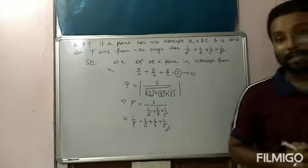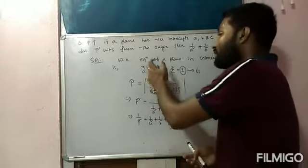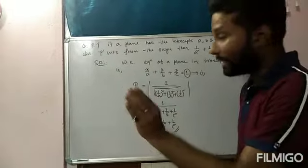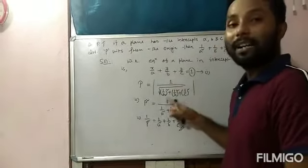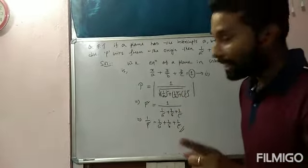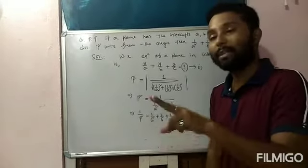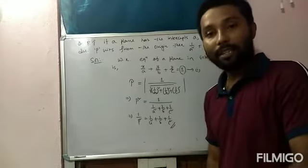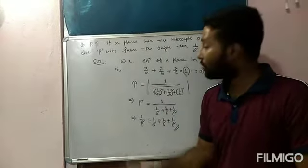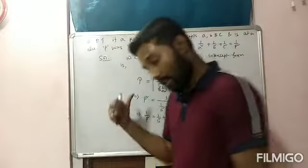This formula is analogous to the 2D straight line formula. In 2D: distance from origin = |constant| / √(coeff of x)² + (coeff of y)². In 3D: |constant| / √(coeff of x)² + (coeff of y)² + (coeff of z)². If you don't know the intercept form equation, you can't prove this result. It is an important question.